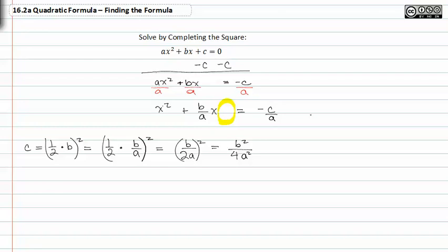So that is what I have to add to both sides. Remember, if I want to add the fractions together, I have to build up the denominator so they match. So the negative c over a has to be built up by four a.